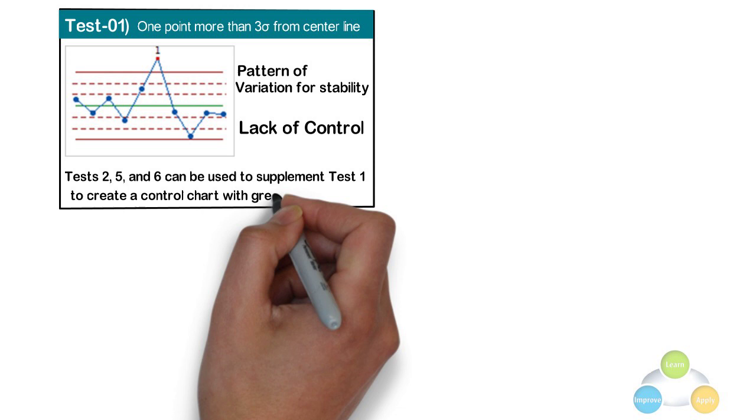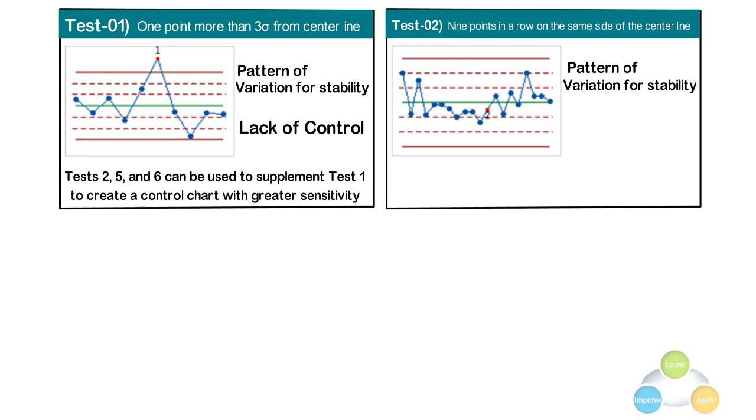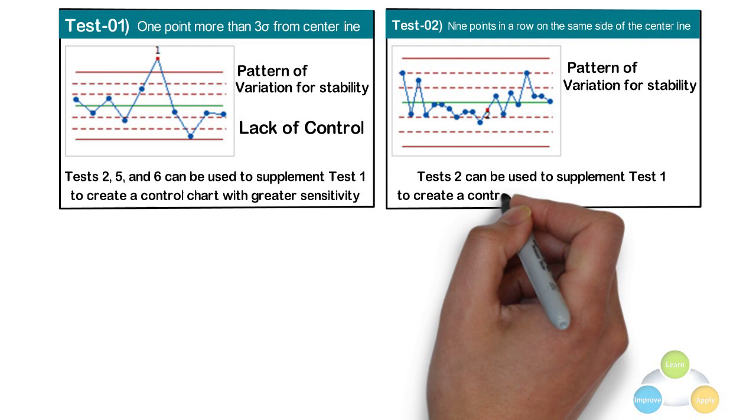Test 2: 9 points in a row on the same side of the center line. Test 2 evaluates the pattern of variation for stability. If small shifts in the process are of concern, test 2 can be used to supplement test 1 to create a control chart with greater sensitivity.